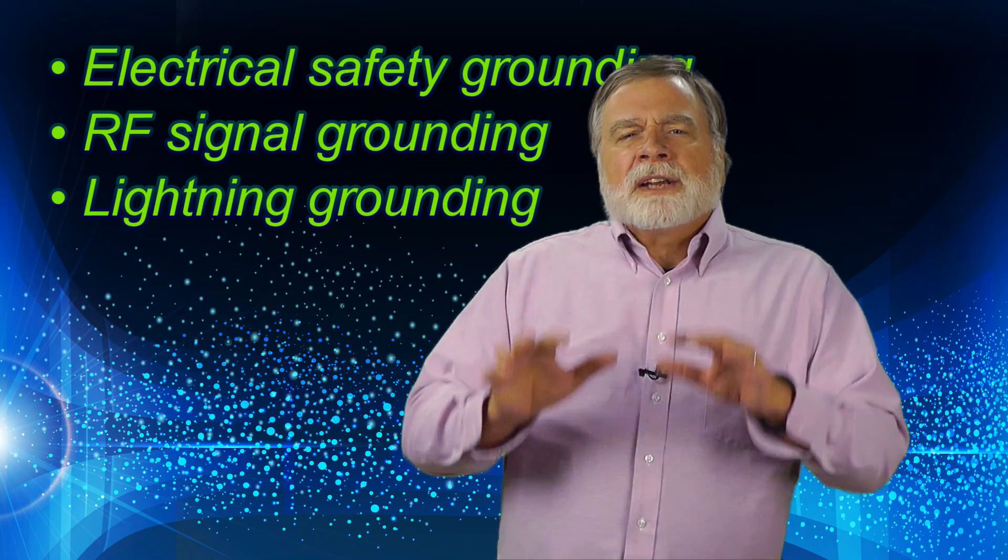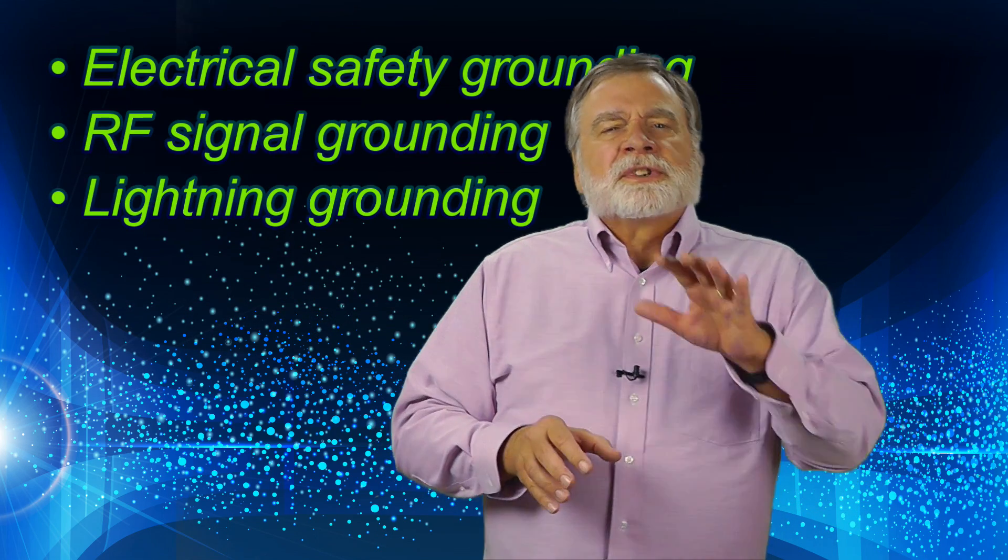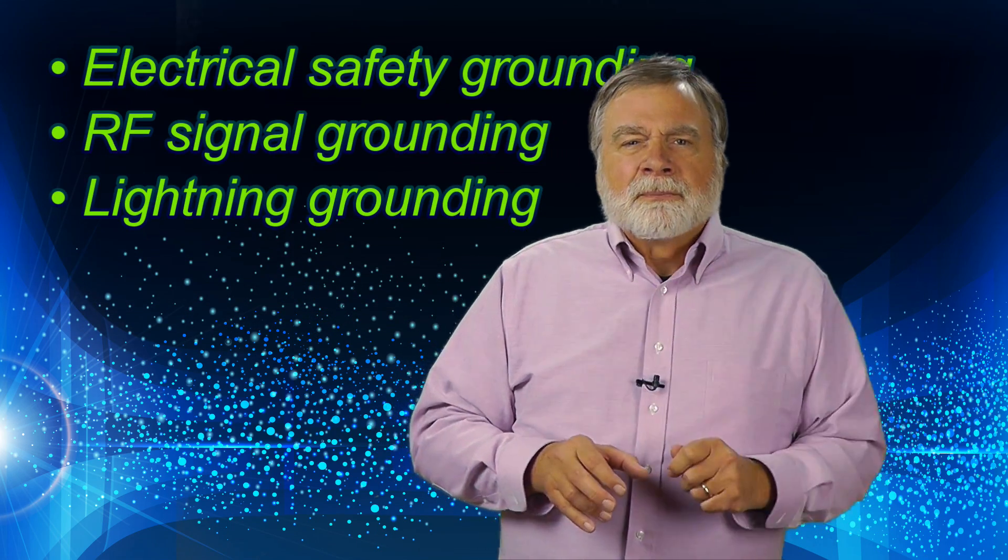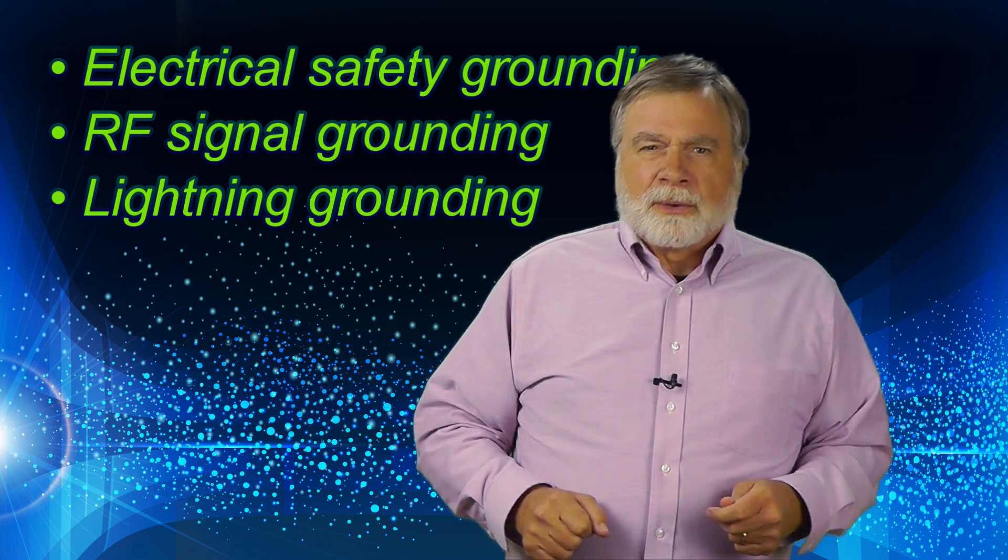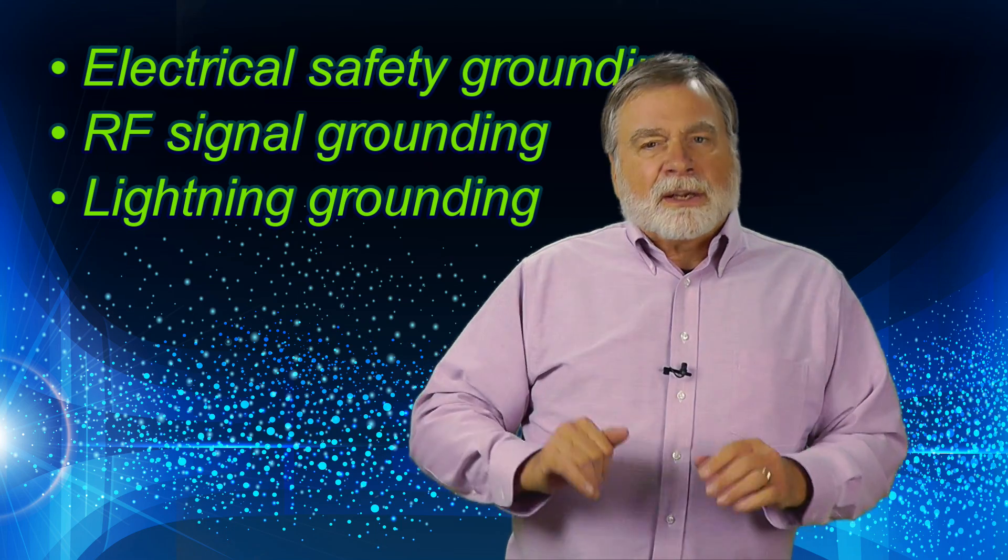There are three kinds of grounding. The first is electrical safety power grounding such as for utility power. The second is the RF signal ground and the third is lightning ground.